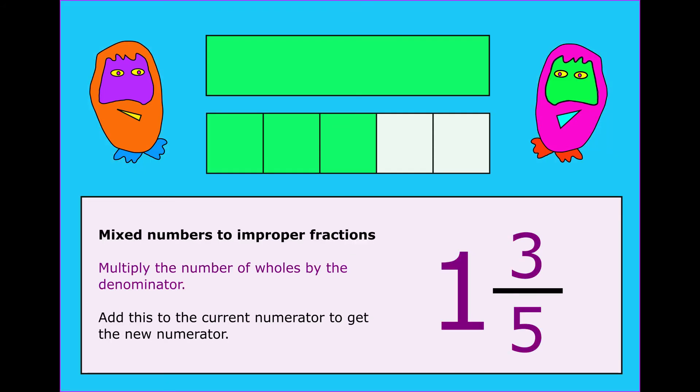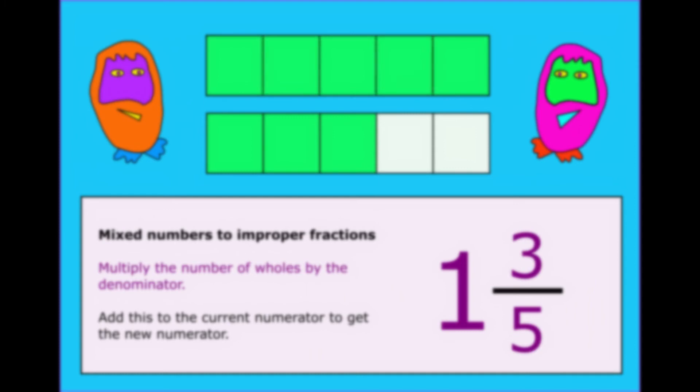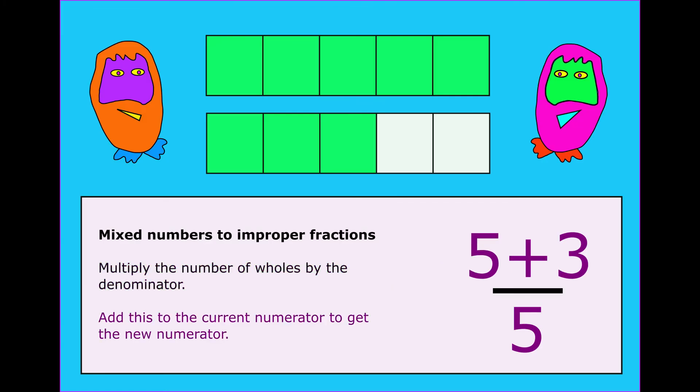If you want to go from a mixed number to an improper fraction, first of all, multiply the whole number by the denominator. Here we have one times five to give you five fifths, and then we have to add that onto the proper fraction, which was three fifths, which gives you a total of eight fifths.